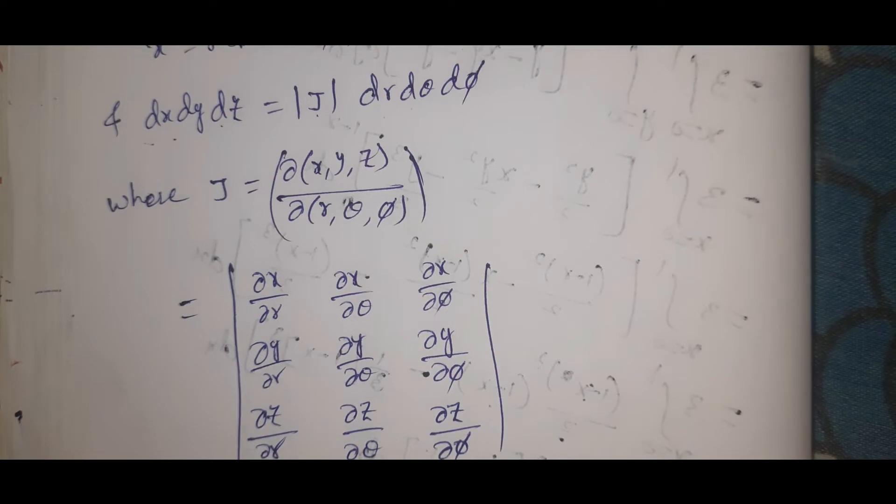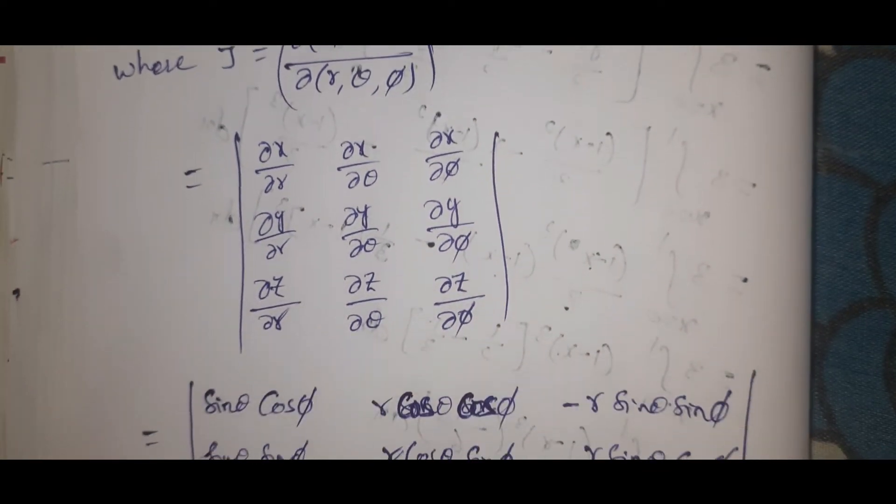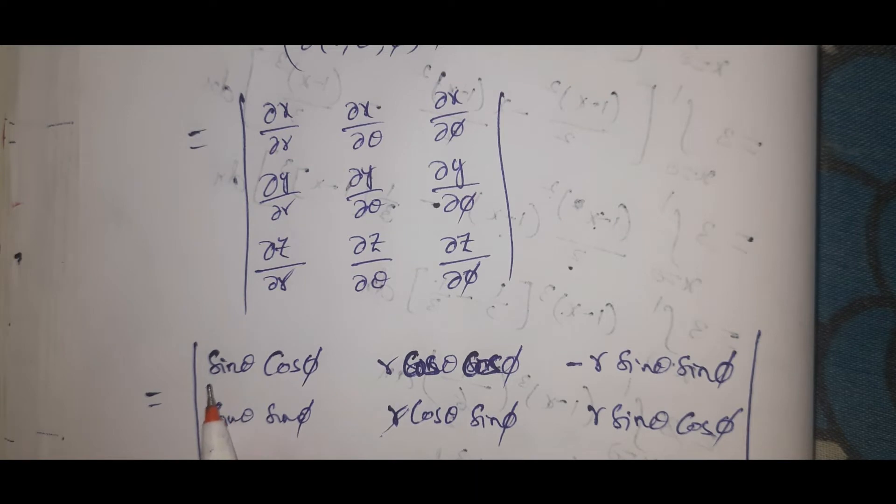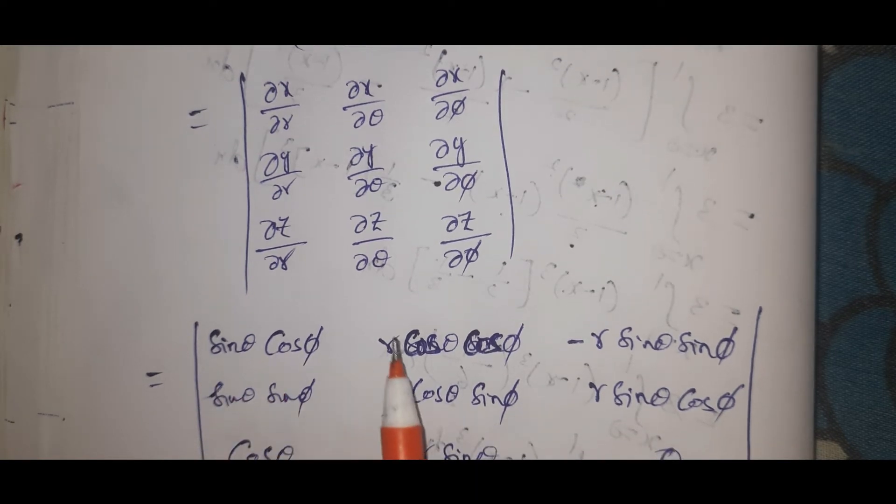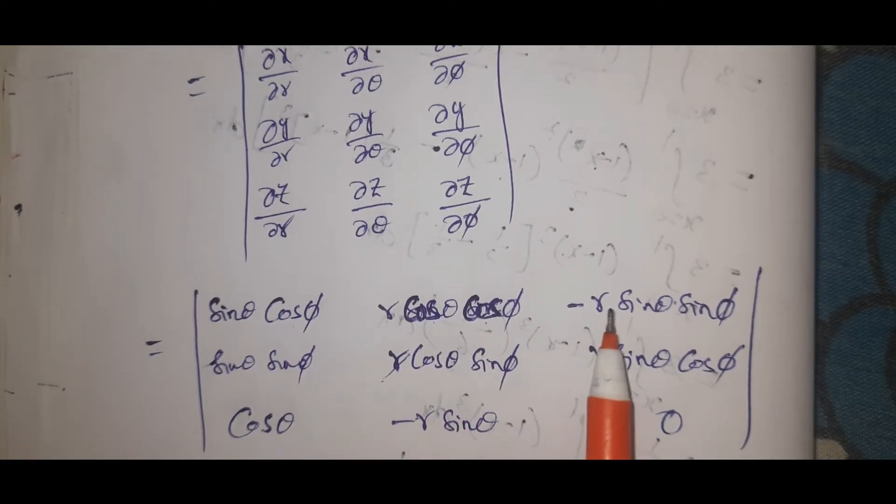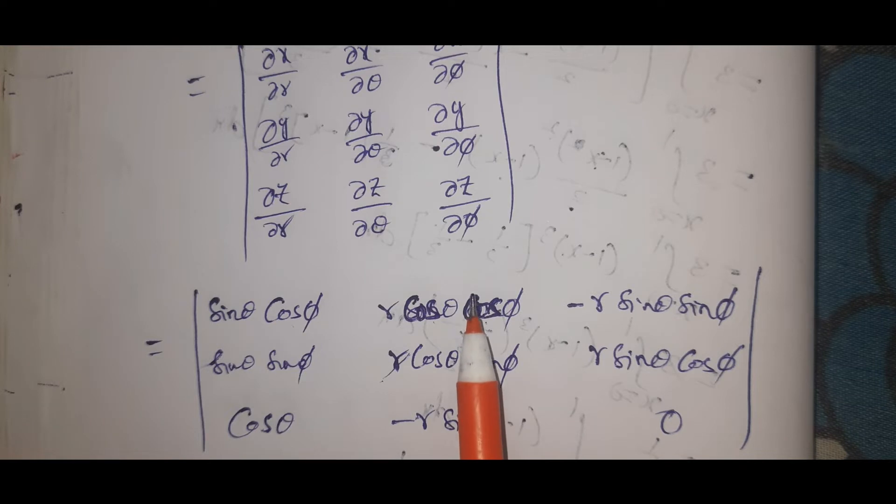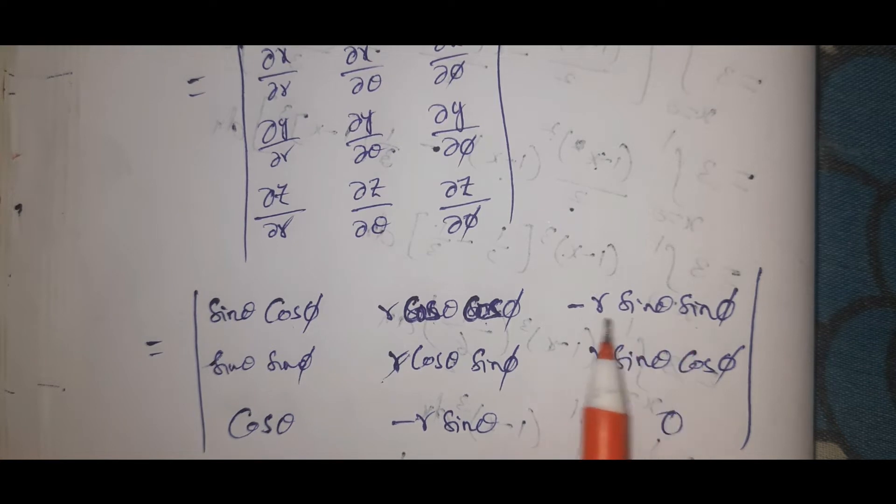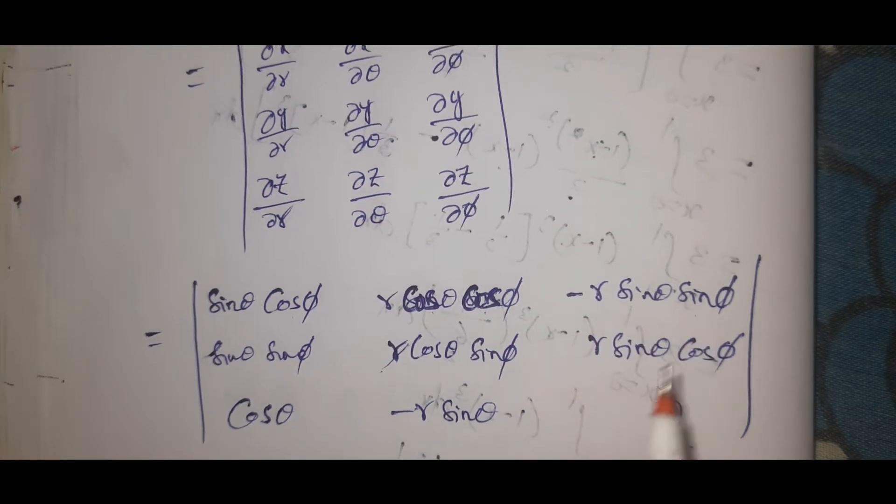This is the Jacobian, already we have to calculate the problem. So if you do the determination, ∂x/∂r is R sin theta cos phi, ∂x/∂theta is cos theta cos phi. Next, ∂x/∂phi is minus sin phi.